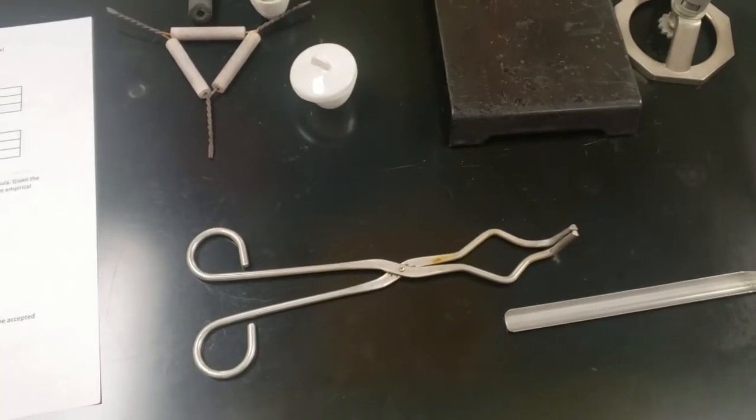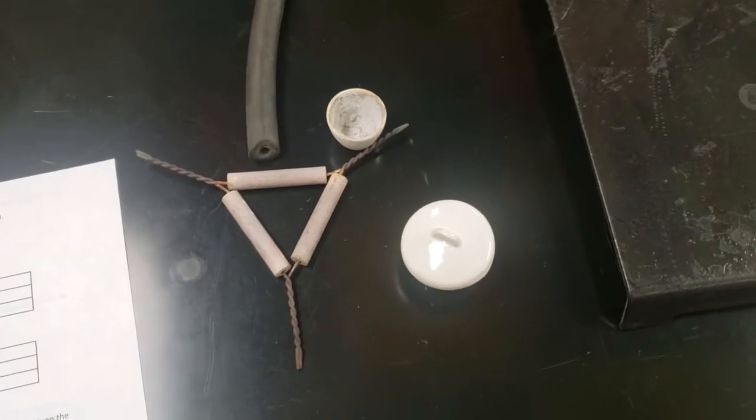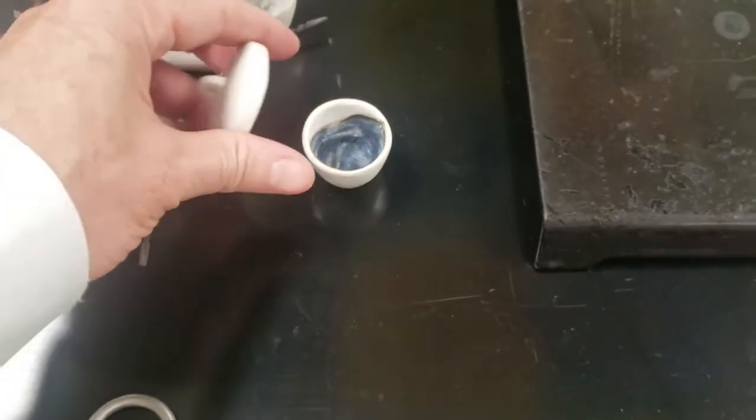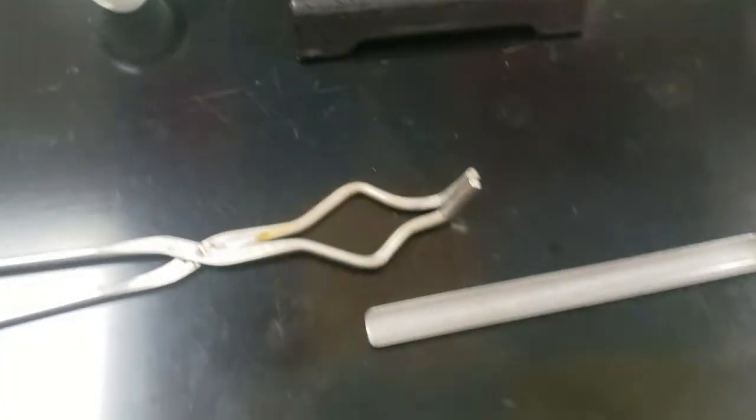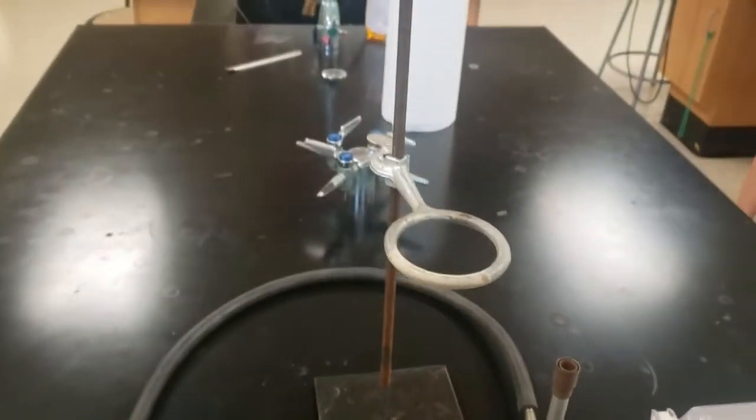Okay, today we're going to determine the empirical formula for silver oxide. Here is all the equipment that you need: tongs, ceramic triangle, crucible with lid, a scoopula, a burner, ring and ring stand.